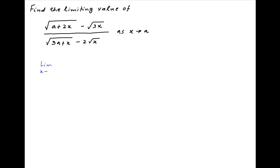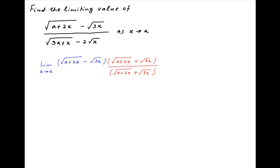The numerator of the given limit is root of a plus 2x minus root of 3x. Multiply and divide this by root of a plus 2x plus root 3x. The denominator of the limit is given to be root of 3a plus x minus 2 root x. Multiply and divide this by root of 3a plus x plus 2 root x.